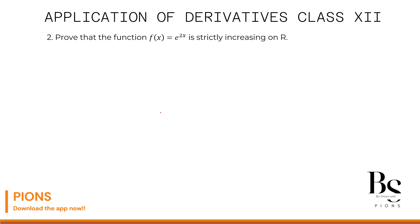Let's move to question 2. Question 2 says: prove that f(x) = e^(2x) is strictly increasing on ℝ. We assume again that x1 > x2. If x1 > x2, then 2·x1 > 2·x2. And since the exponential function is an increasing function, e^(2x1) will obviously be greater than e^(2x2). If f(x) = e^(2x), then f(x1) is greater than f(x2).